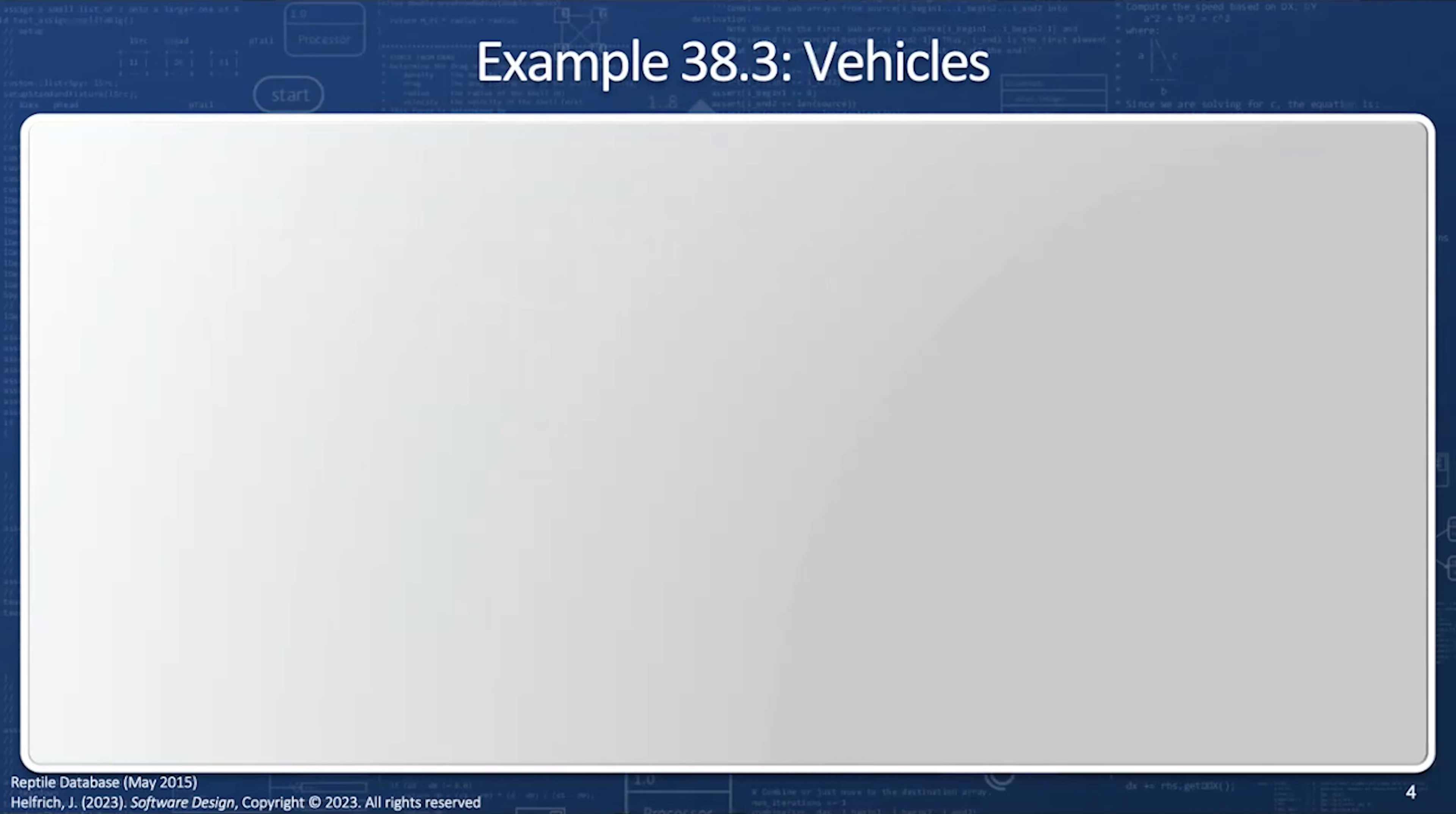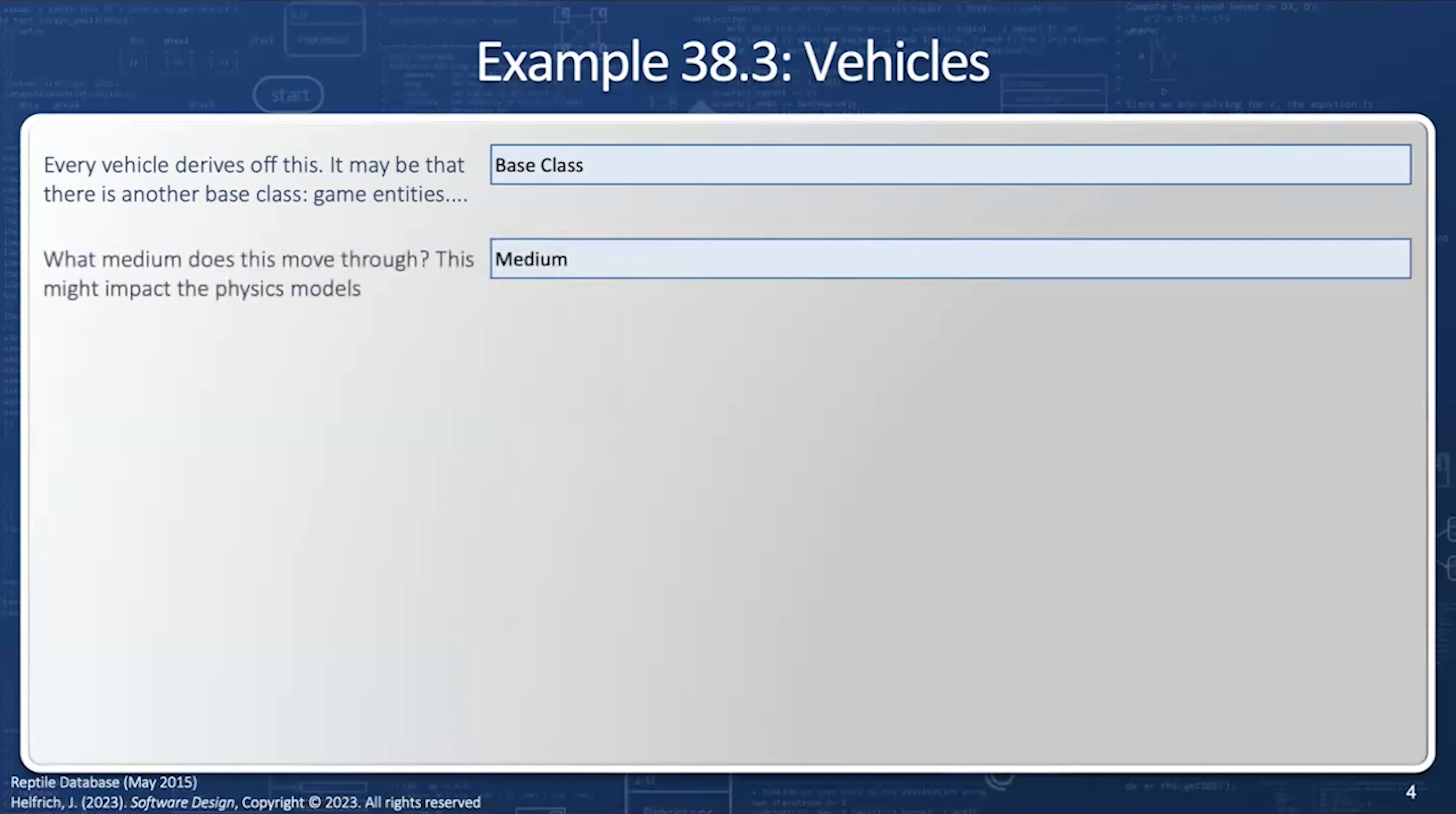Our first step is to come up with a strategy for the inheritance tree. Our base class, every vehicle derives off this. It may be that there's another base class above it called game entities, but right now we're going to start with the vehicles base class. Next is the medium in which the vehicle travels, and this might impact the physics models. Next, we have the function of the vehicle. What purpose does this vehicle serve? How does it interact with other game entities?